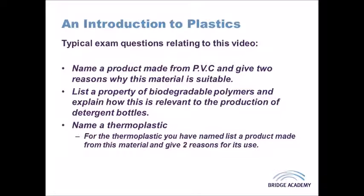The third group is elastomers, sometimes called rubbers. They are flexible, can return to their shape after force is applied, and are stretchy. They're useful when you want a tactile feel or elasticity — for example, grips on a toothbrush. Elastomers can be joined with thermoplastics in injection molding through over-molding or dual-shot injection molding, where two different plastics are injected within the same mold.